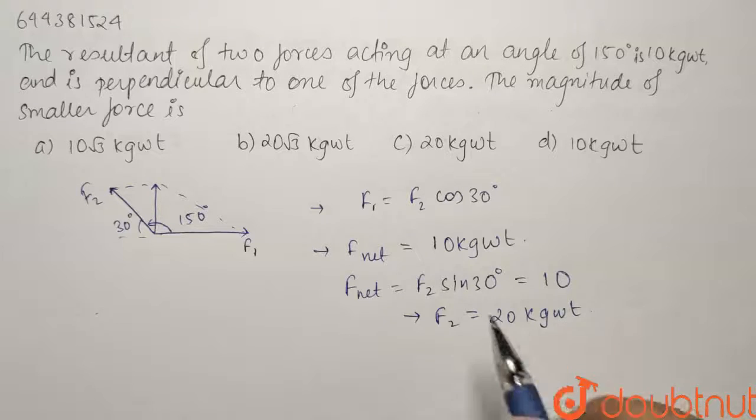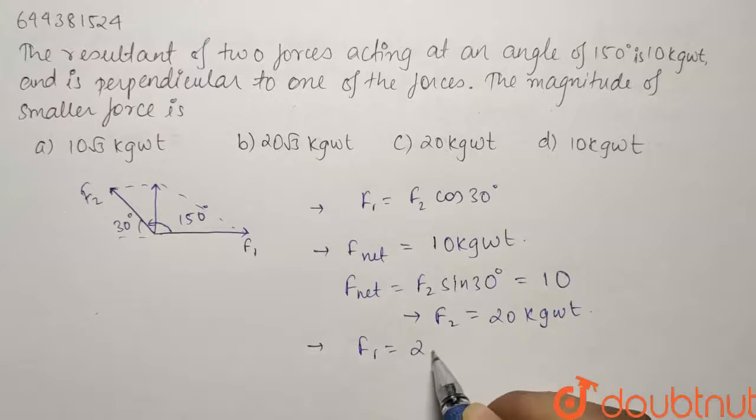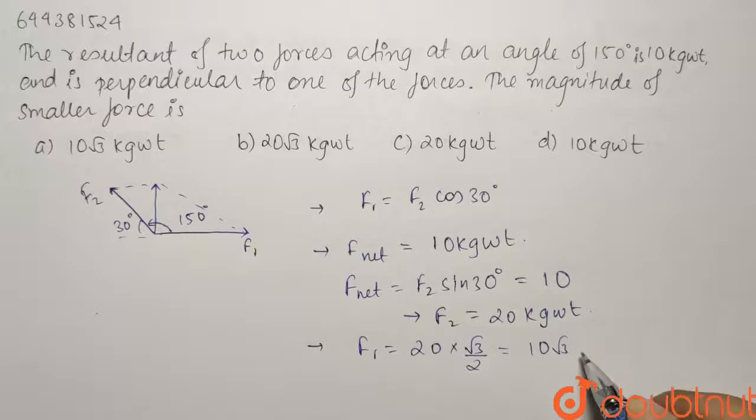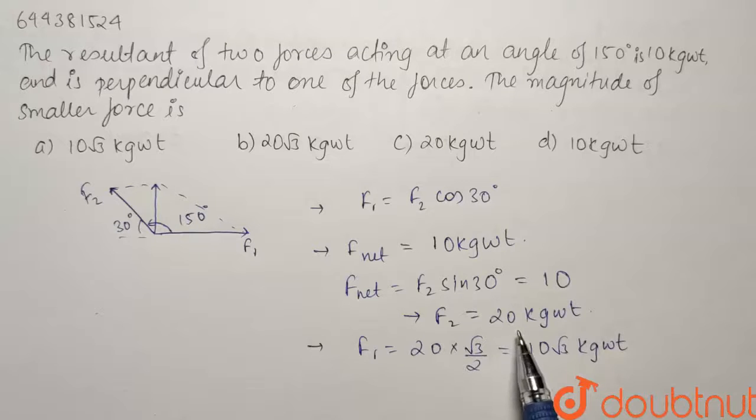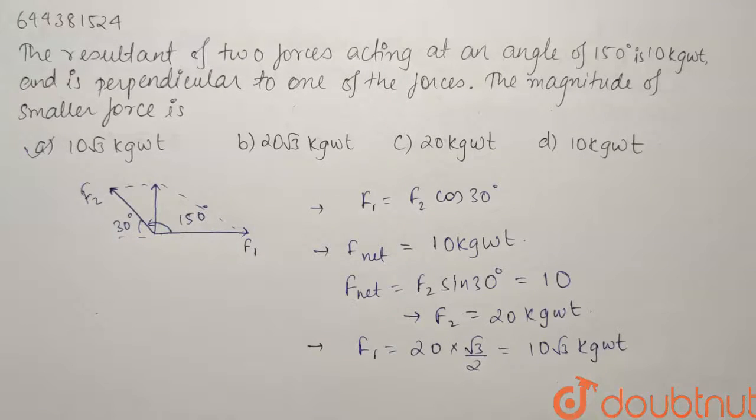As we have found F2, now from this relation we can easily find F1. F1 is going to be F2 cos 30, that is 20 cos 30, that is 20 multiplied by root 3 by 2, which is 10 root 3 kg weight. So one force comes out to be 20 and the other is 10 root 3. Our option A, the smaller force is 10 root 3 kg weight. Thank you.